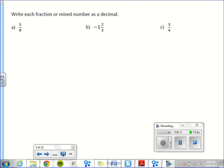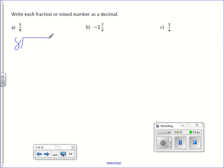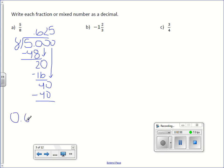Write each fraction or mixed number as a decimal. The way we're going to do this is we're going to simply divide. 8 into 5. How many times does 8 go into 5? It does not. 8 into 50, 6 times. Minus 48 is 2. Bring down the 0. 8 into 20 twice. Minus 16 is 4. Bring down a 0. 8 into 40, 5 times. So our decimal is terminating and it's 0.625 or 625 thousandths.